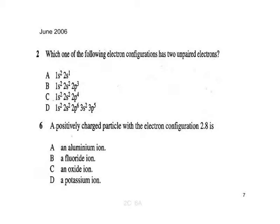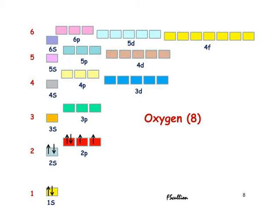Pause the slide and have a go at both of these, please. The configuration is 1s², 2s², 2p⁴. Let's examine what that looks like and see that it does indeed have 2 unpaired electrons. This is in fact oxygen, atomic number 8. You'll see we have an unpaired electron in the 2py orbital and the 2pz orbital. In the 2px we have a pair of electrons, but the 2py and 2pz each have a single unpaired electron.